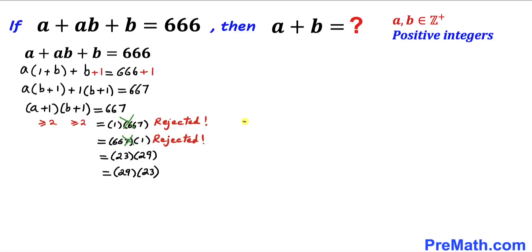Therefore, we end up with simply a plus 1 taking the value 23 and b plus 1 taking the value 29. This is one possibility.